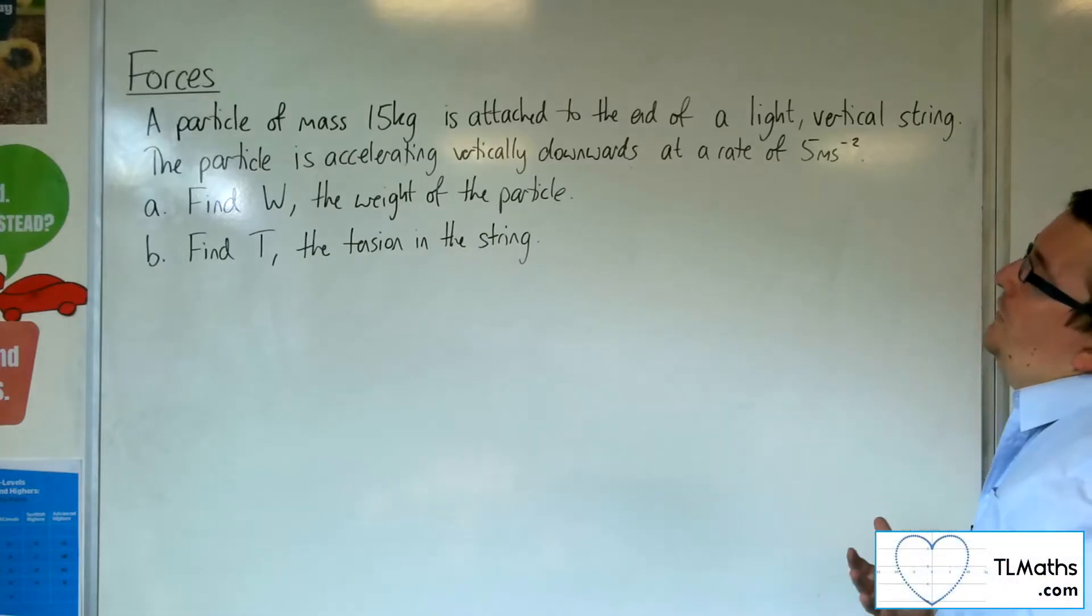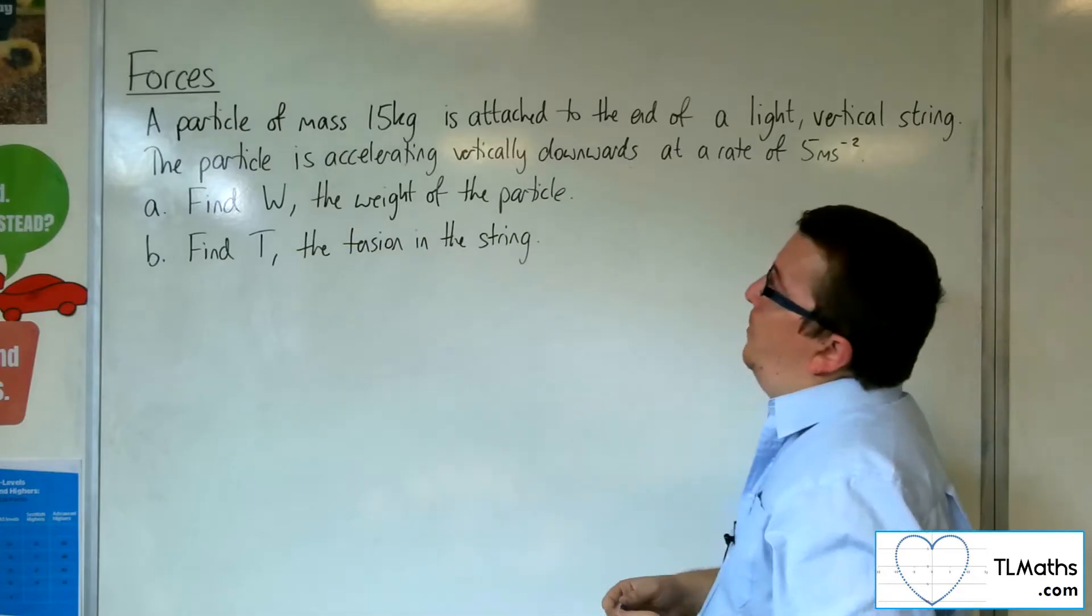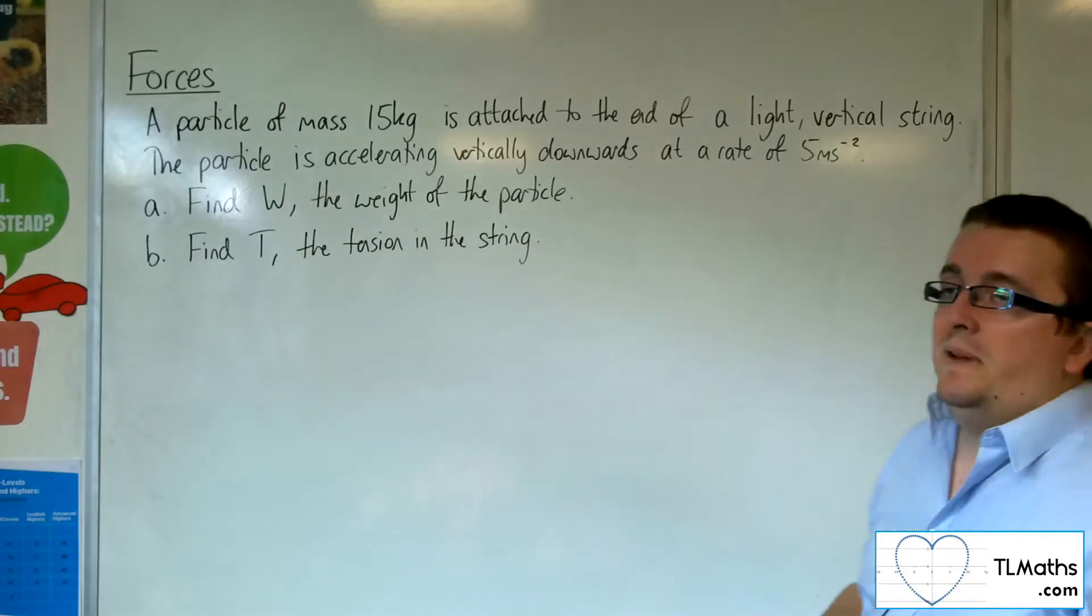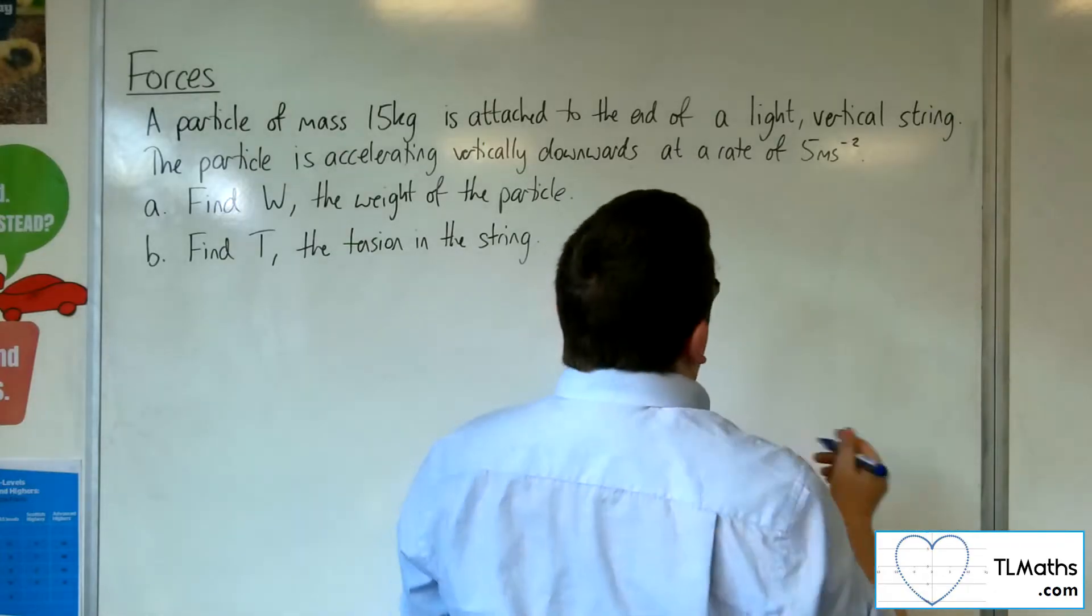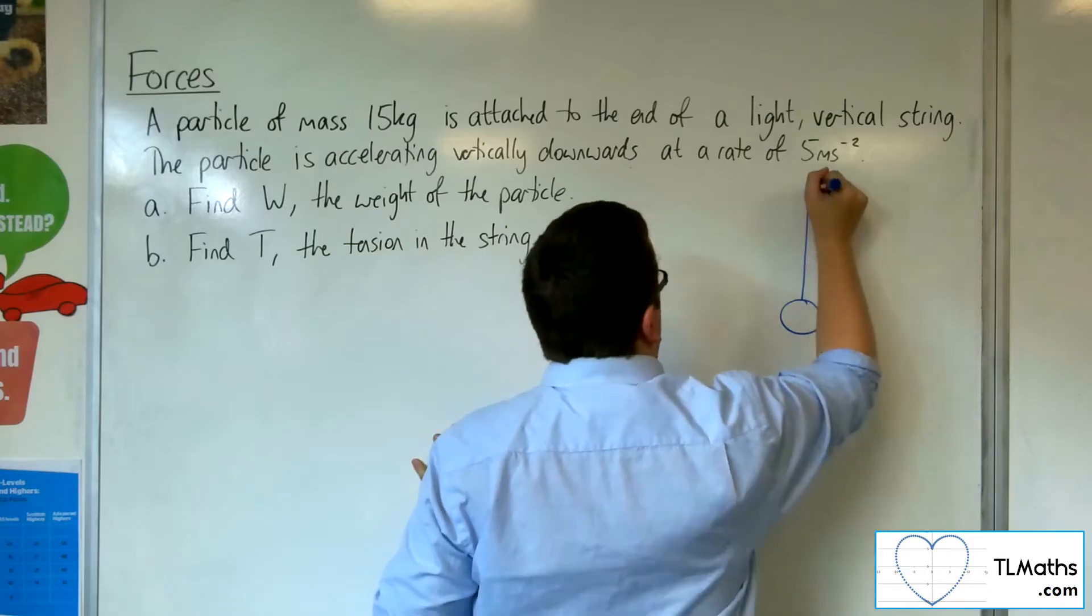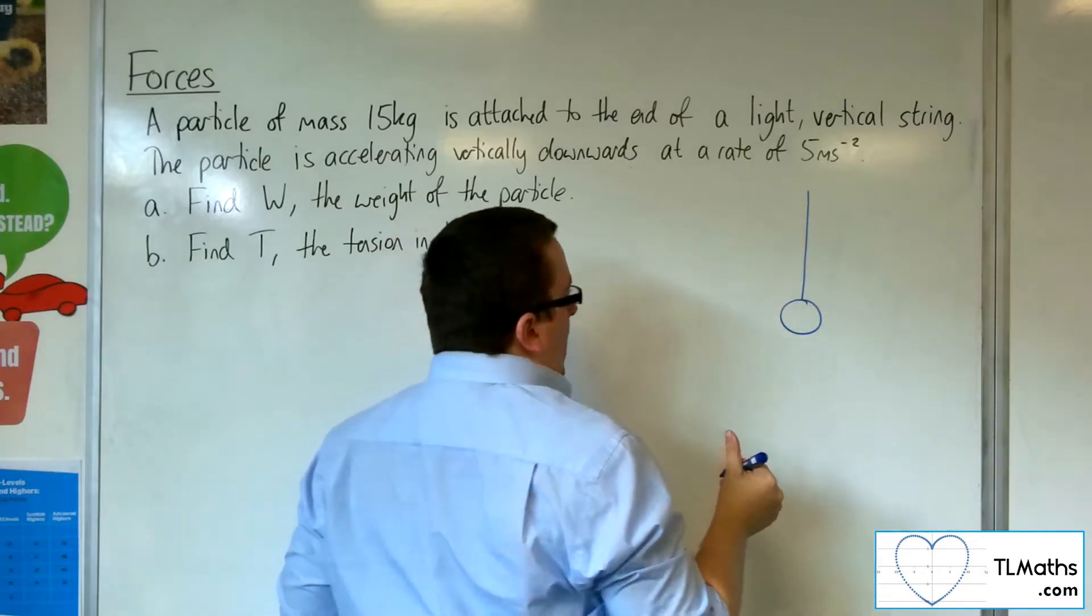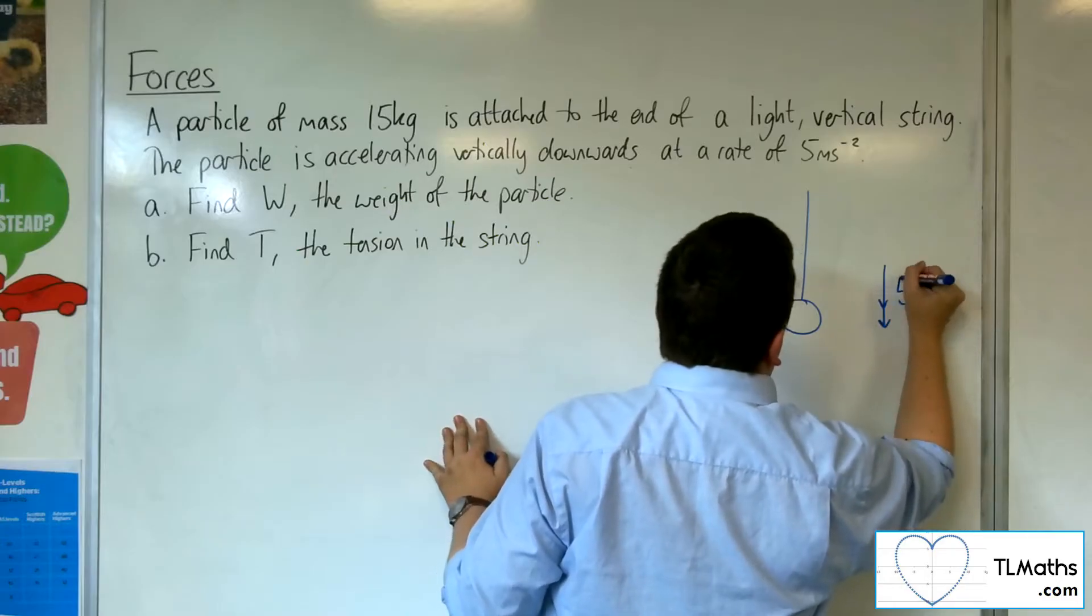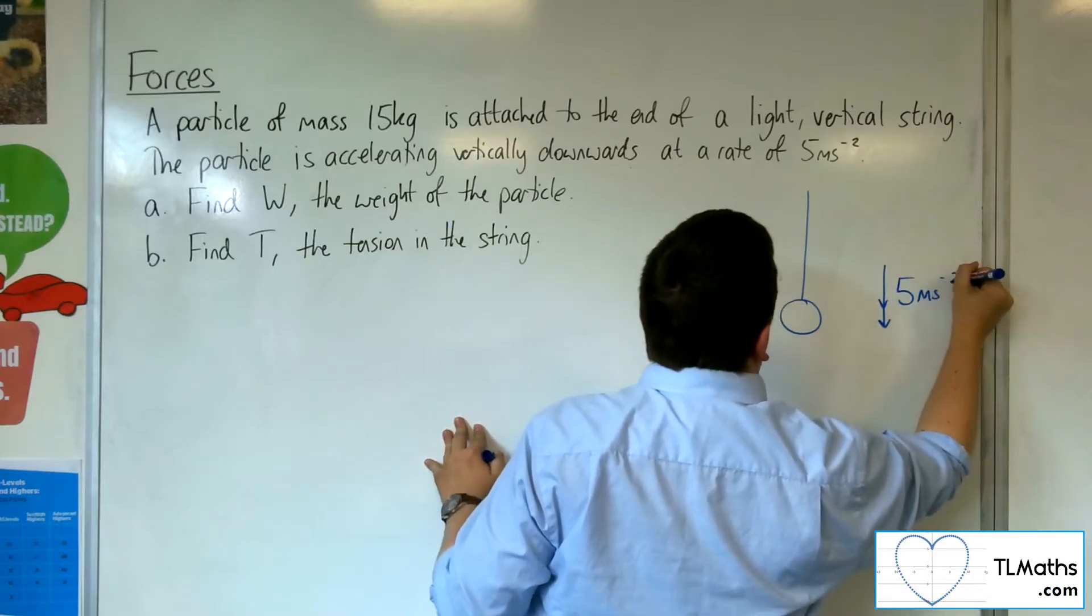A particle of mass 15 kilos is attached to the end of a light vertical string. The particle is accelerating vertically downwards at a rate of 5 metres per second per second. Let's draw a diagram with this. We've got this particle attached to this string and it is accelerating downwards at 5 metres per second per second.